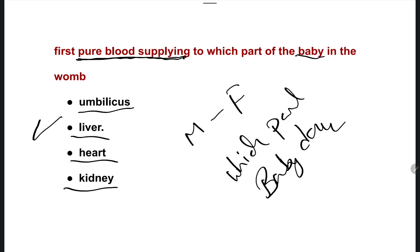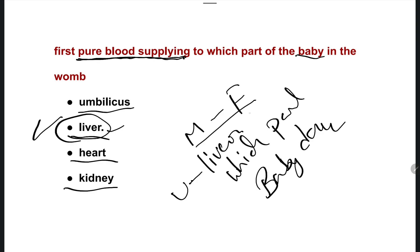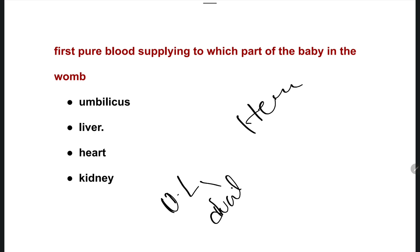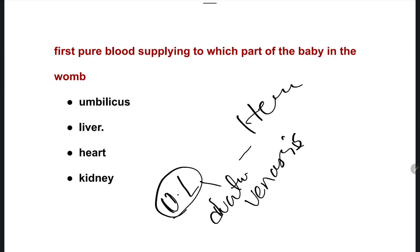The right answer is option B, the liver. The pure blood coming from the umbilicus goes directly to the liver first. After that, it goes to the heart. The pathway from umbilicus to liver is through the ductus venosus. So the first part of the baby's body supplied by pure blood is the liver.